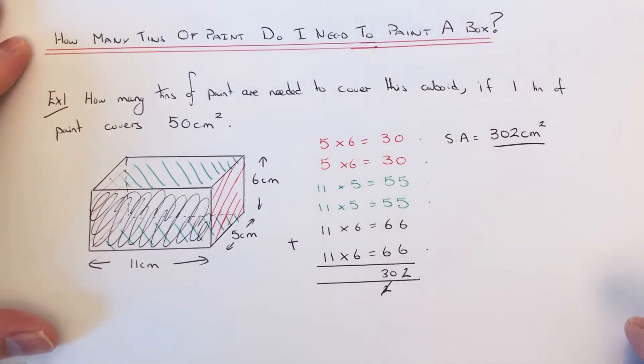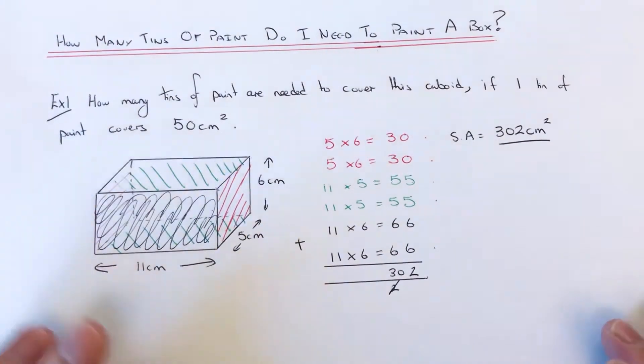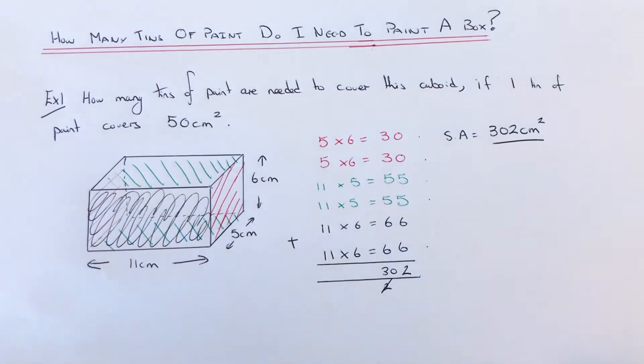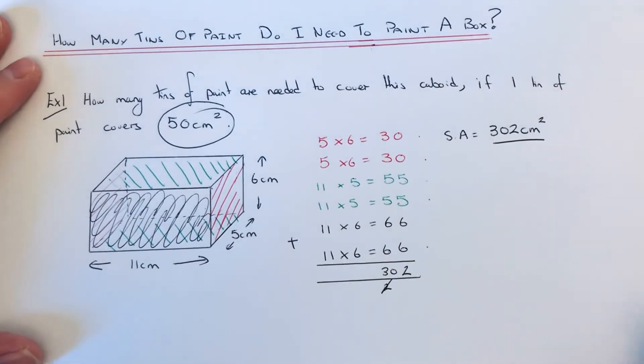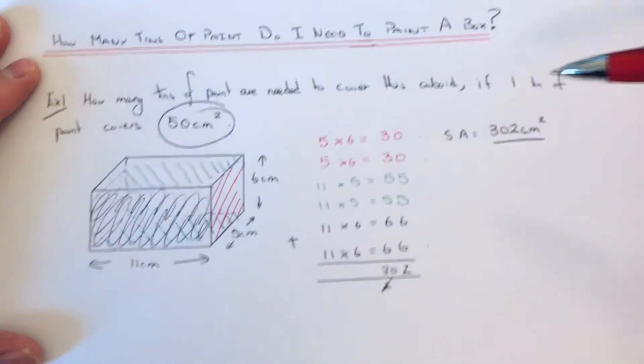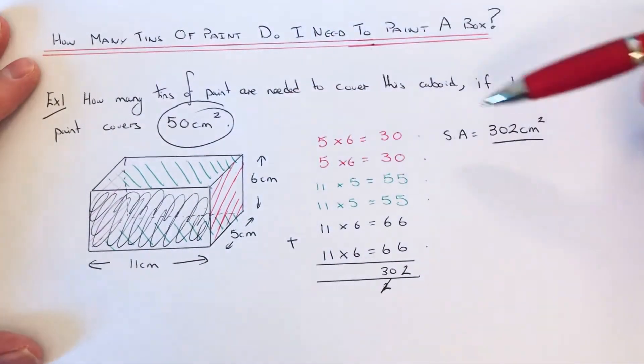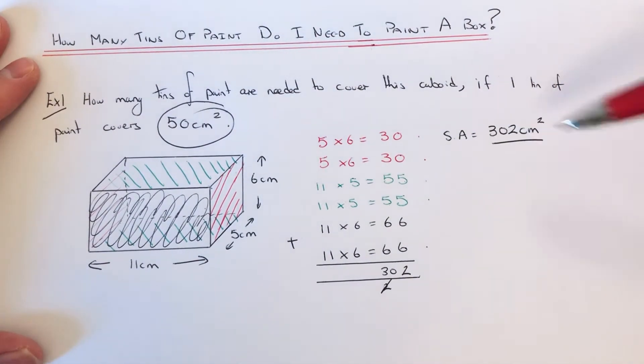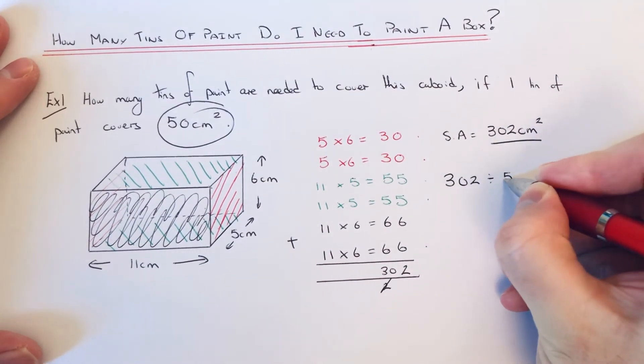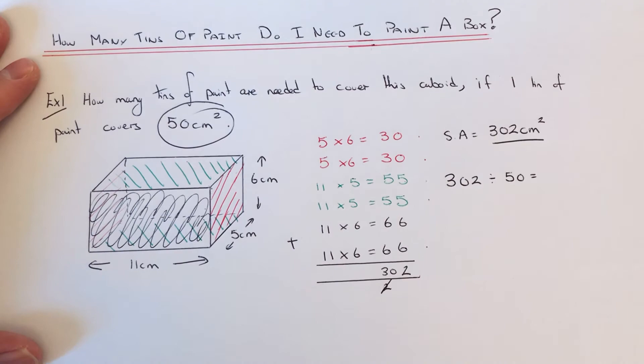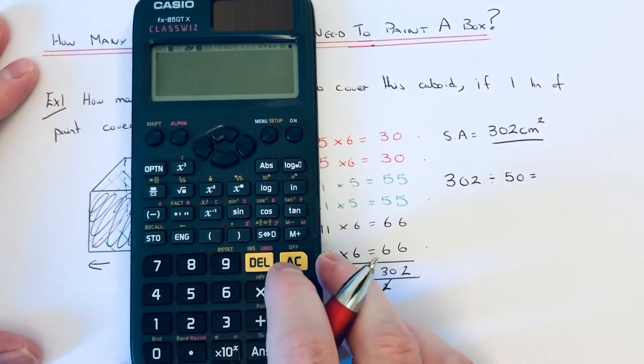Okay, so we now need to calculate how many tins of paint we need to cover. We're told in the question that one tin of paint covers 50 centimeters squared, so we need to work out how many 50s go into 302. So we do 302 divided by 50. I'm going to do this on the calculator.